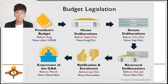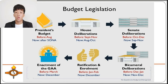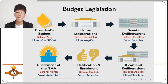The President and the DBM then review the General Appropriations Bill and prepare a veto message where budget items subjected to direct veto or conditional implementation are identified and general observations are made. Under the Constitution, the General Appropriations Bill is the only legislative measure where the President can impose a line veto; in all other cases, a law is either approved or vetoed in full. When the GAA is not enacted before the fiscal year starts, the previous year's GAA is automatically reenacted, meaning agency budgets for programs and projects remain the same, though funding for terminated programs is realigned.